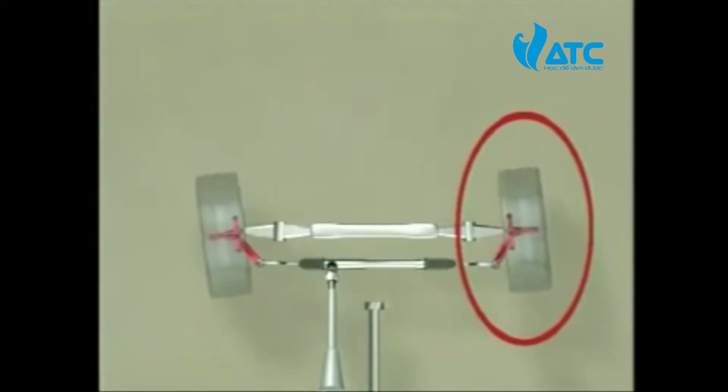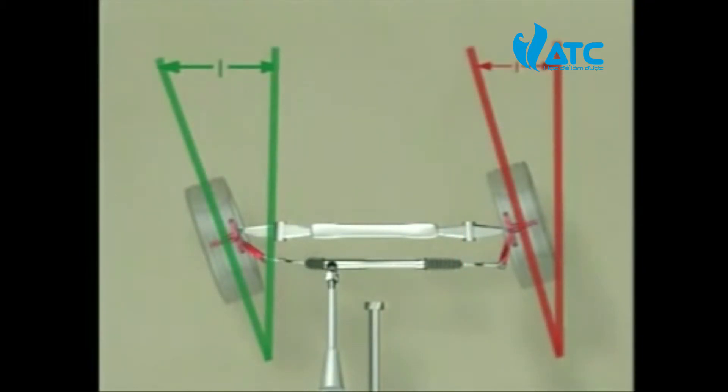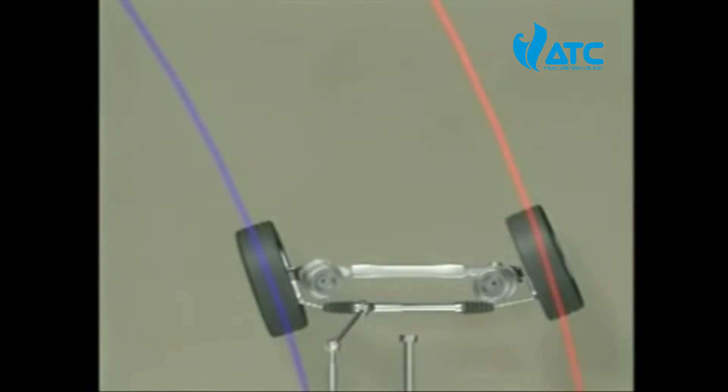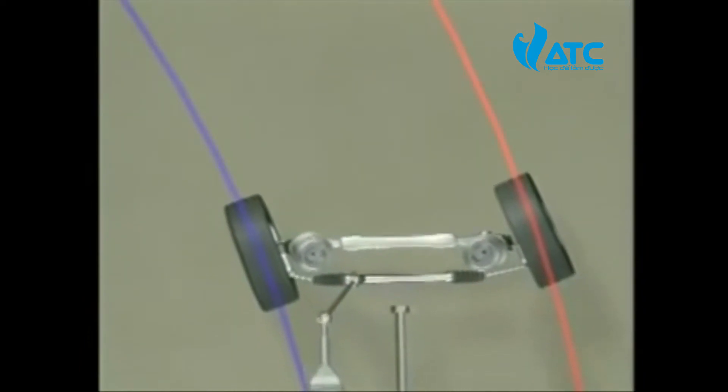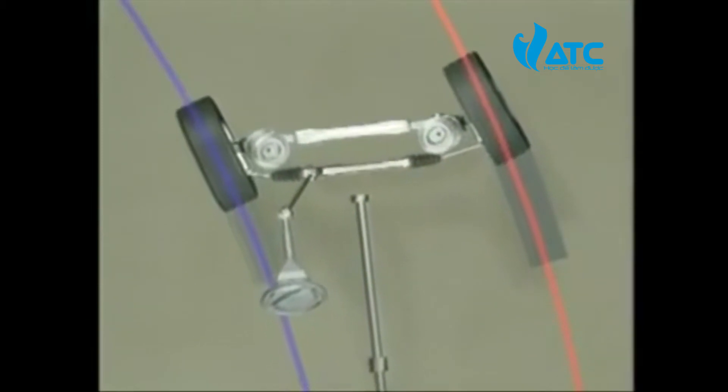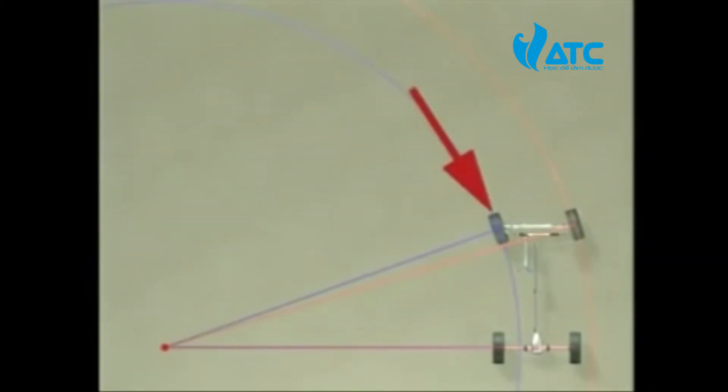Turning radius is also known as toe out on turns. When the vehicle is steered into a turn, the steering arms cause the wheels to turn at different angles, creating a toe out condition. If both wheels turned at the same angle, the outside wheel would scuff excessively because its turning radius should be greater.